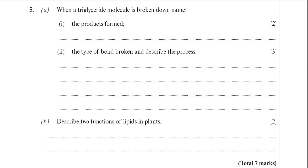So let's go through it then. When a triglyceride molecule is broken down, name the products formed. Alright, so that's testing you on your understanding of what a triglyceride is composed of. So the products will be glycerol, and you will then actually get fatty acids being produced as well.